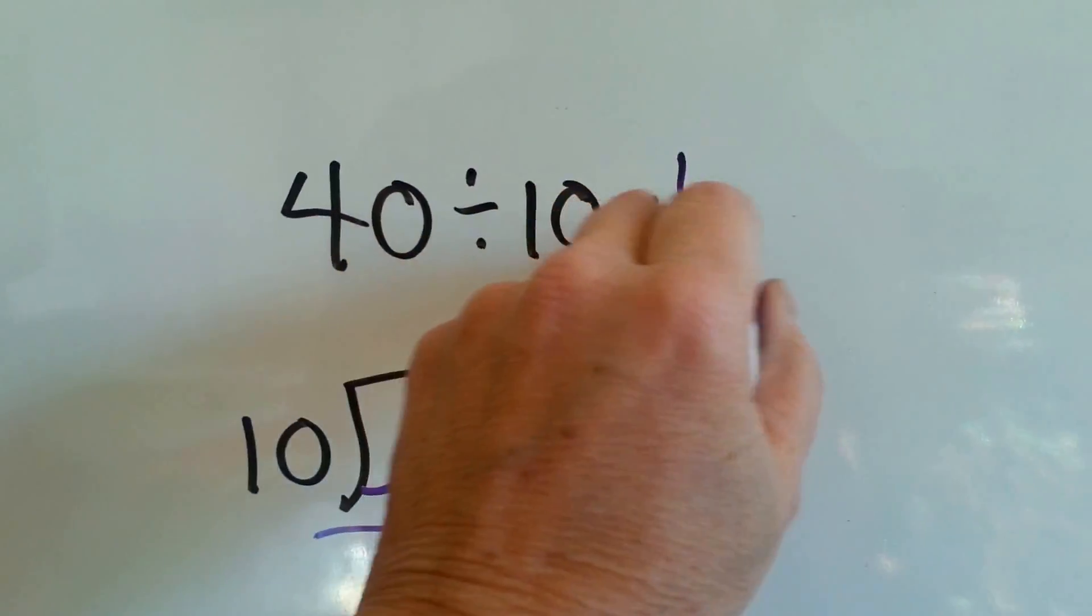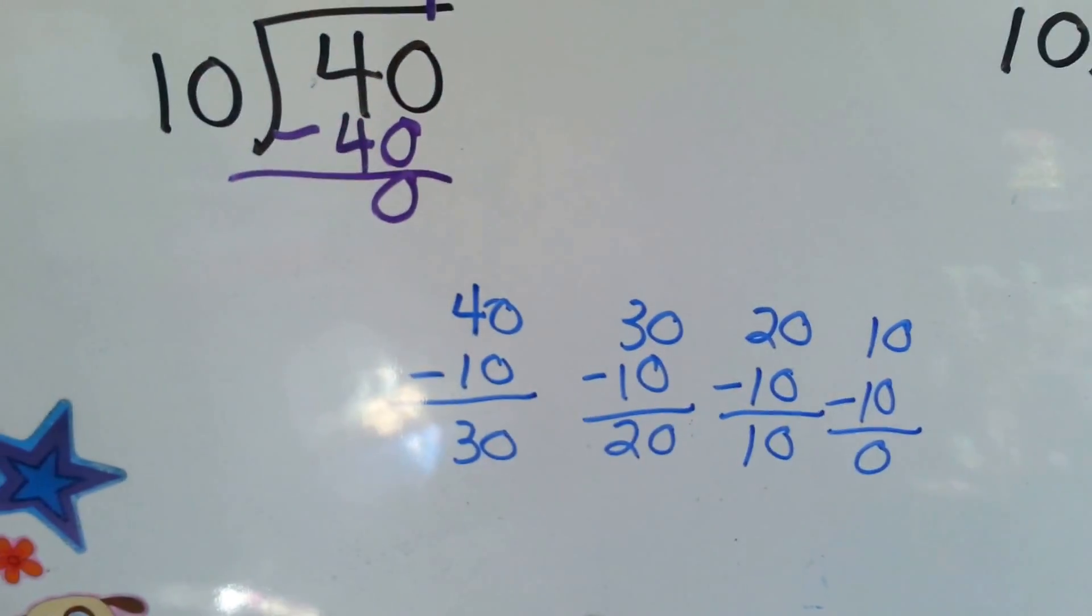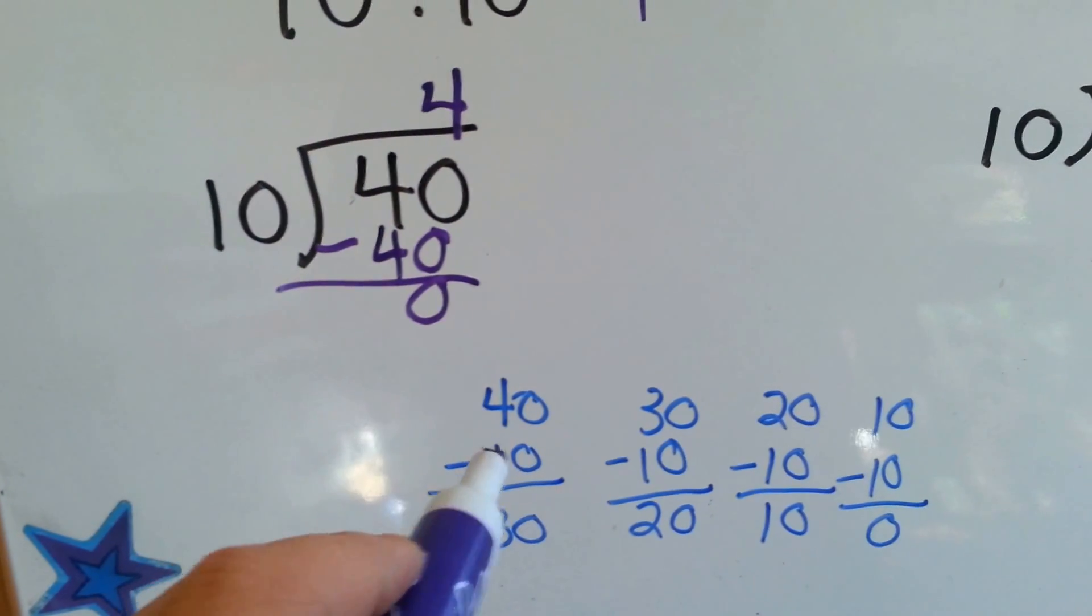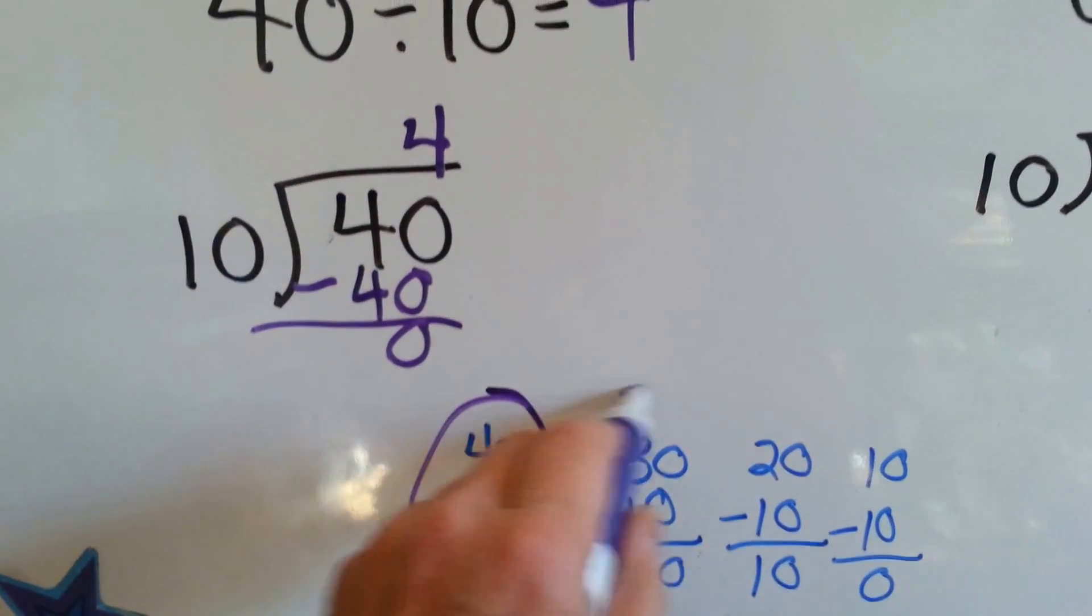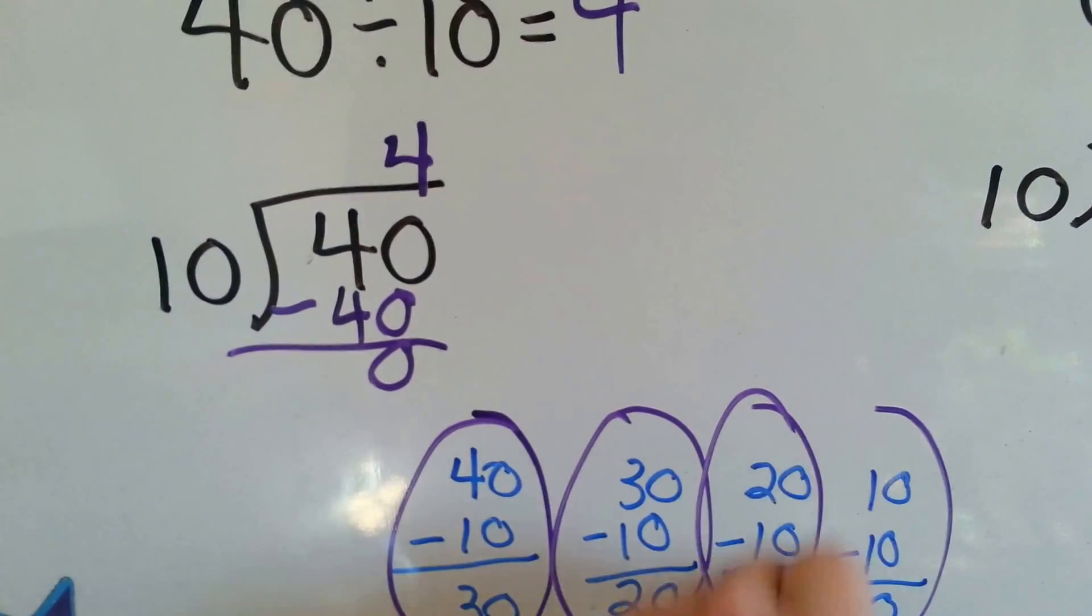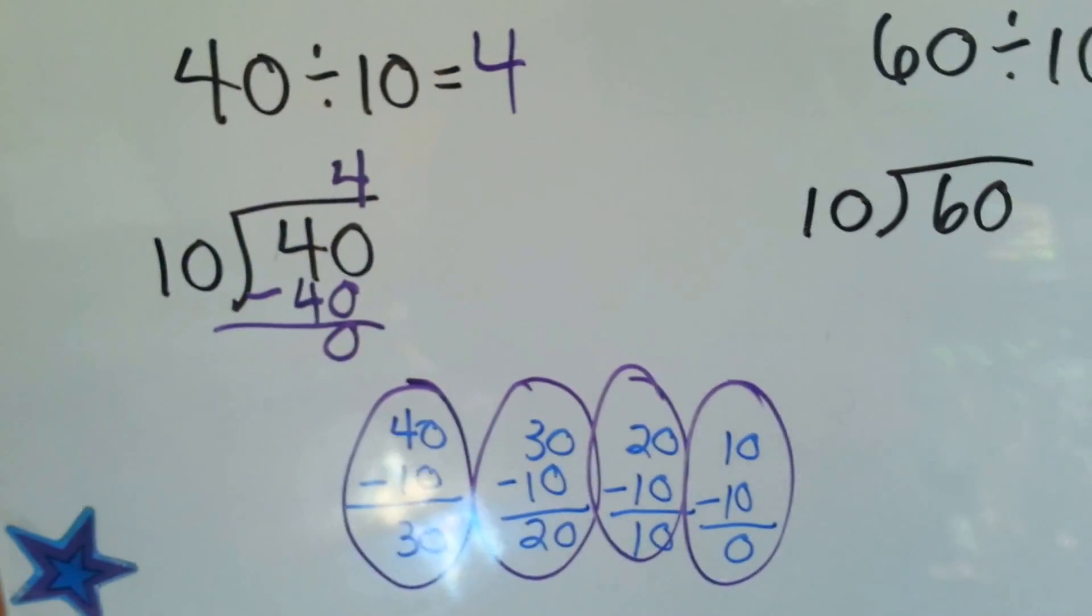40 divided by 10 is 4. Now another way we could have done it is the subtraction method, where we started with the 40 and kept taking 10 away until we got to 0, and then counted how many times we did it. We would do it 4 times to get to 0, so the answer would be 4.